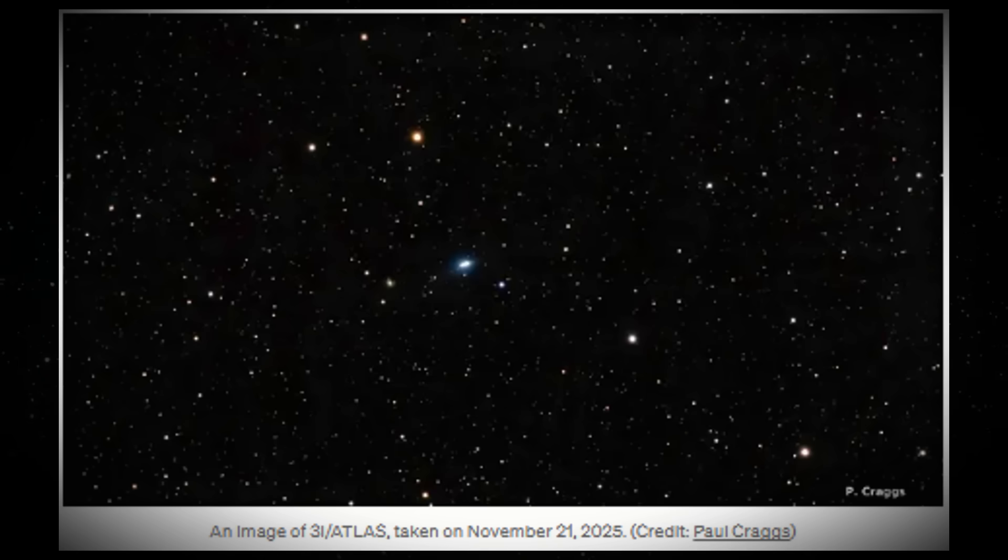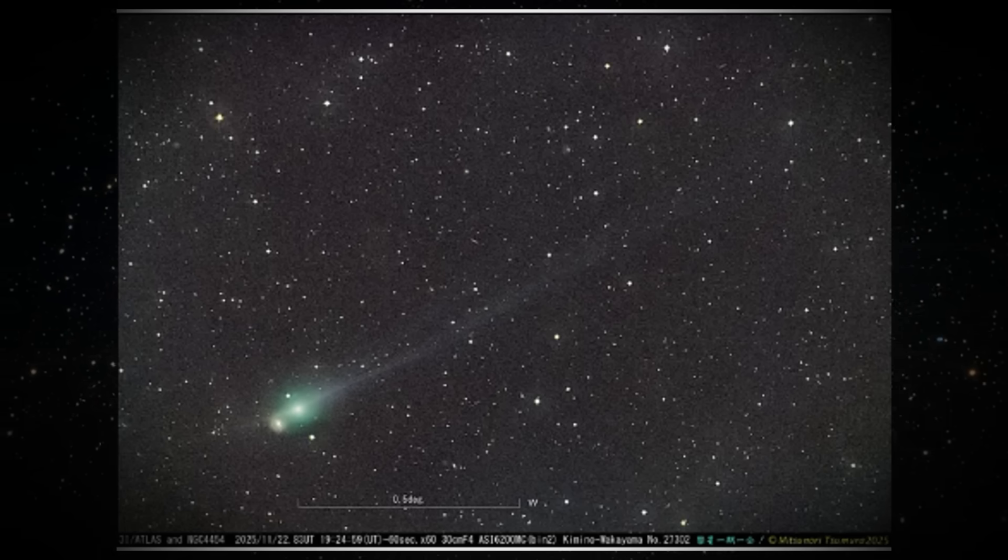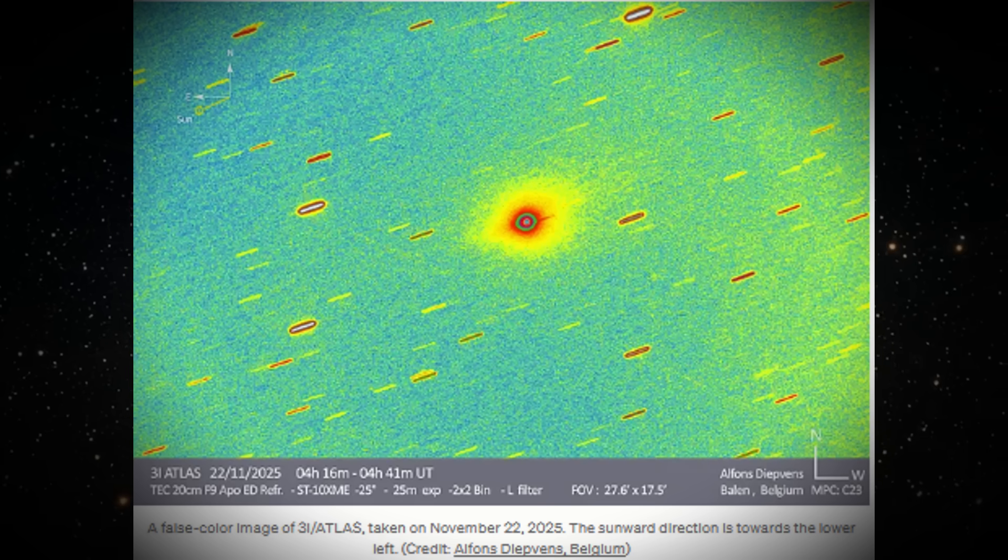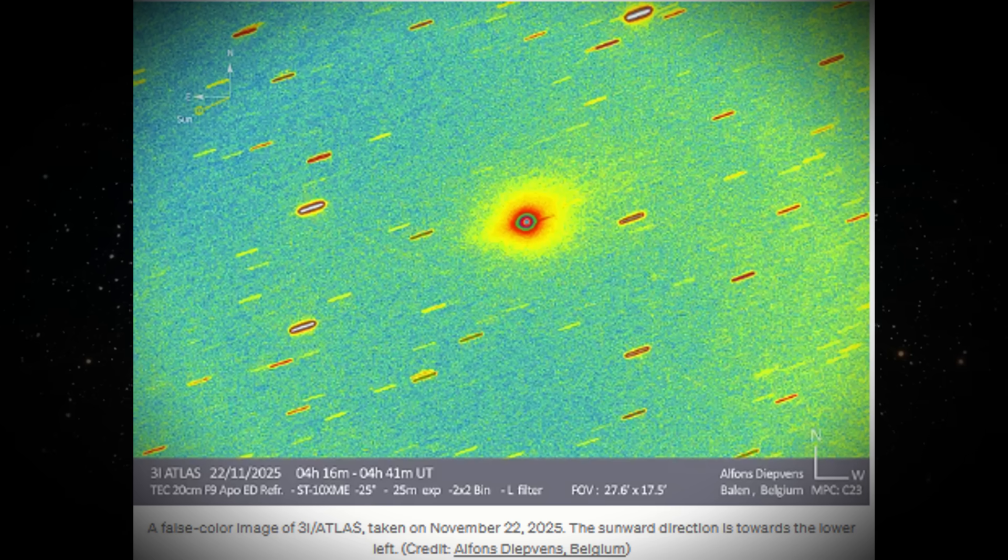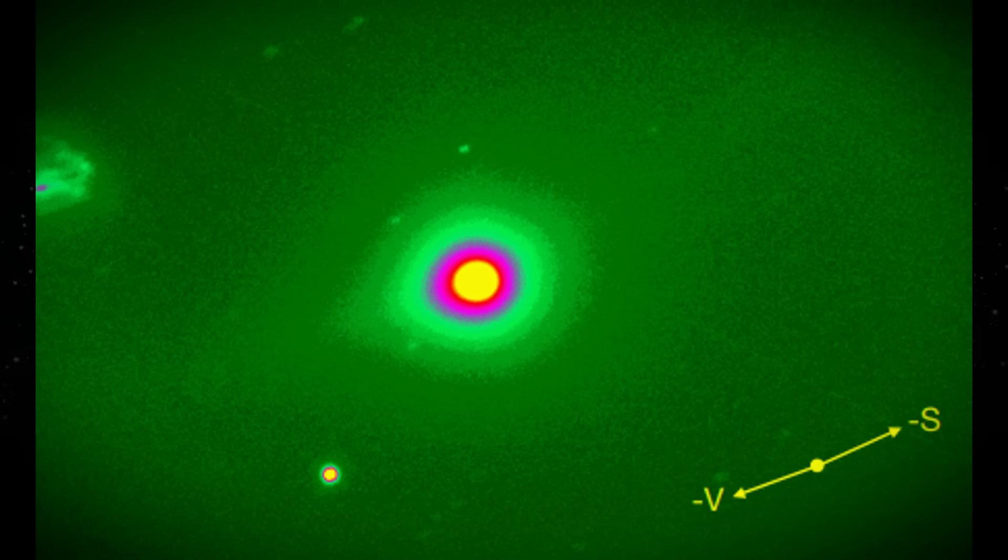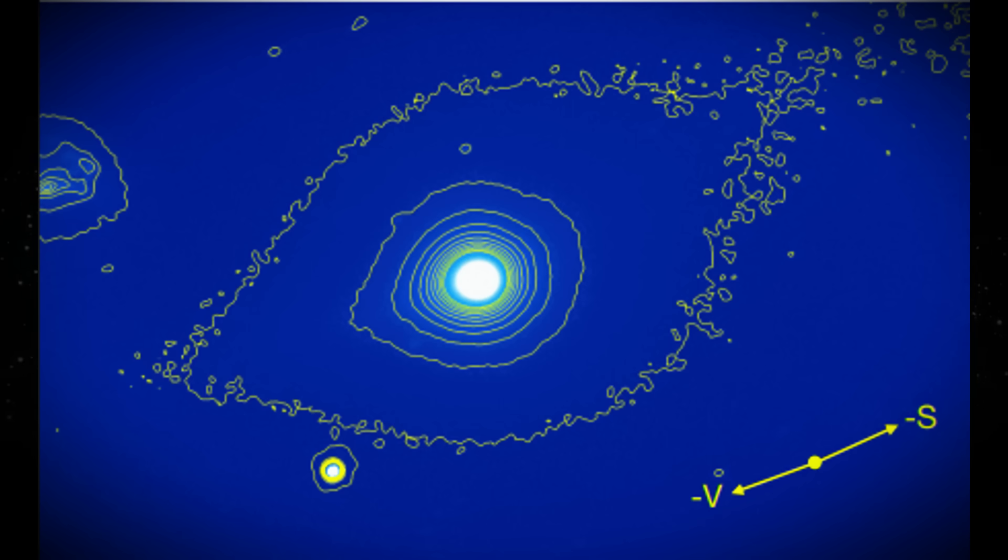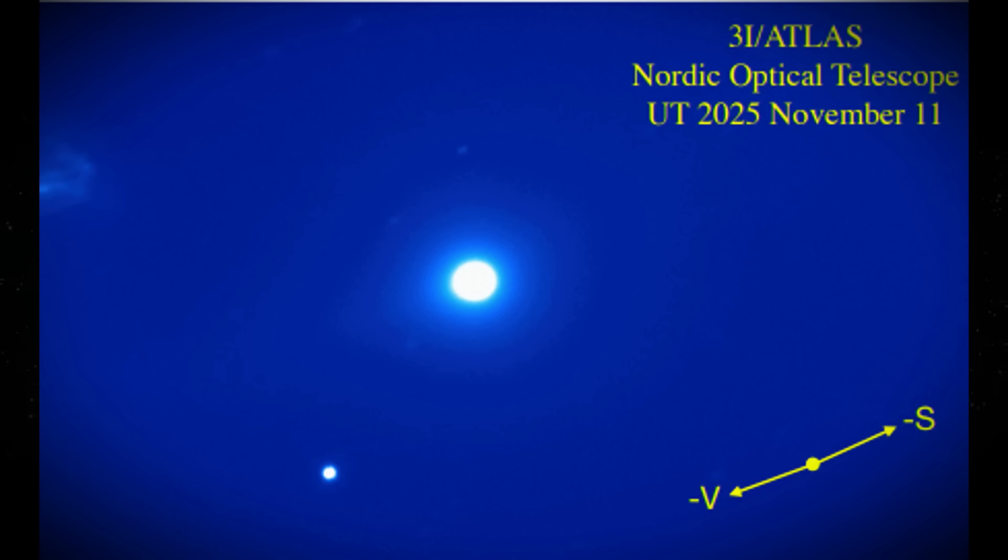is doing something that defies all known laws of probability and physics. This cosmic projectile is traveling toward Jupiter and will make its closest approach on March 16th, 2026, less than 4 months from now. More than 230 observatories around the world are tracking this object as if it were the most important event in modern astronomy.